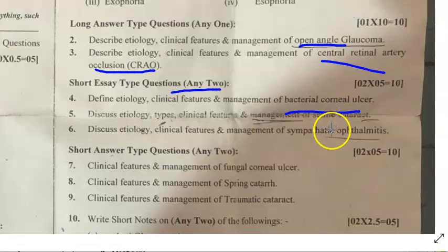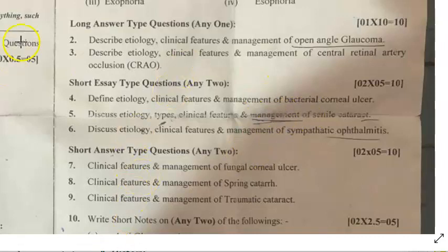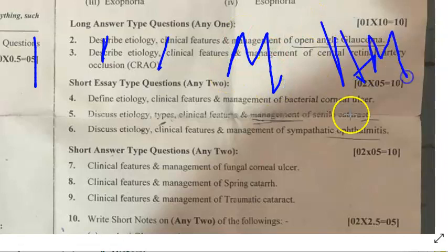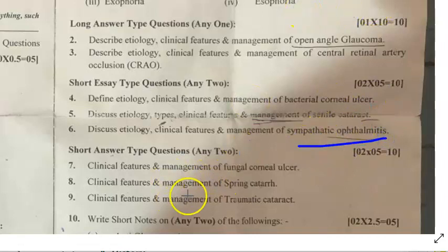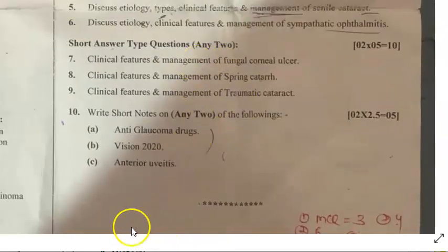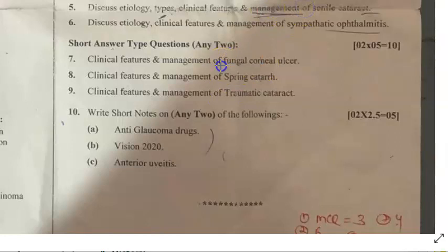Senile cataract: nuclear cataract involves color changes; cortical cataract involves lamellar separation. Stages: immature, mature, and hypermature. Management includes SICS and phaco surgeries. Sympathetic ophthalmitis appears in multiple question papers — very important. Fungal corneal ulcer: identify causative fungi, treatment is difficult; occurs due to antibiotic or steroid abuse. Spring cataract (vernal keratoconjunctivitis with keratitis) — very important.